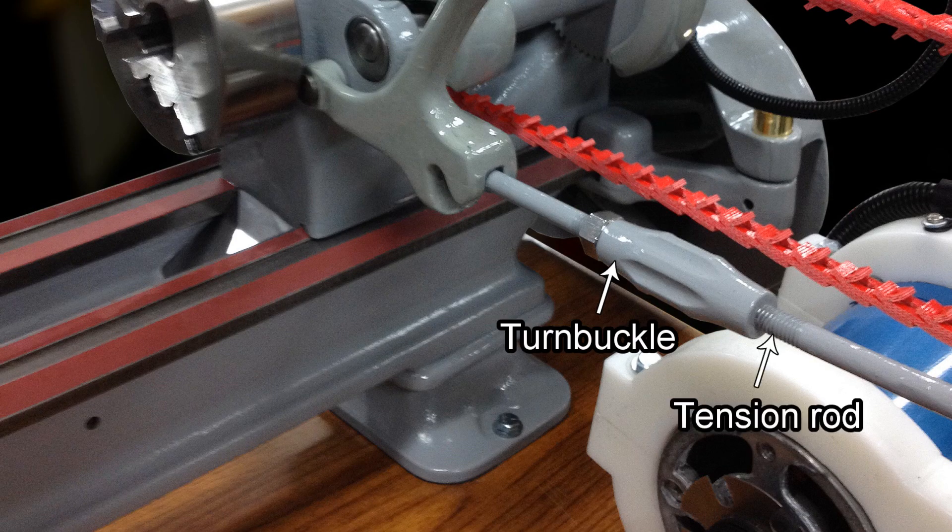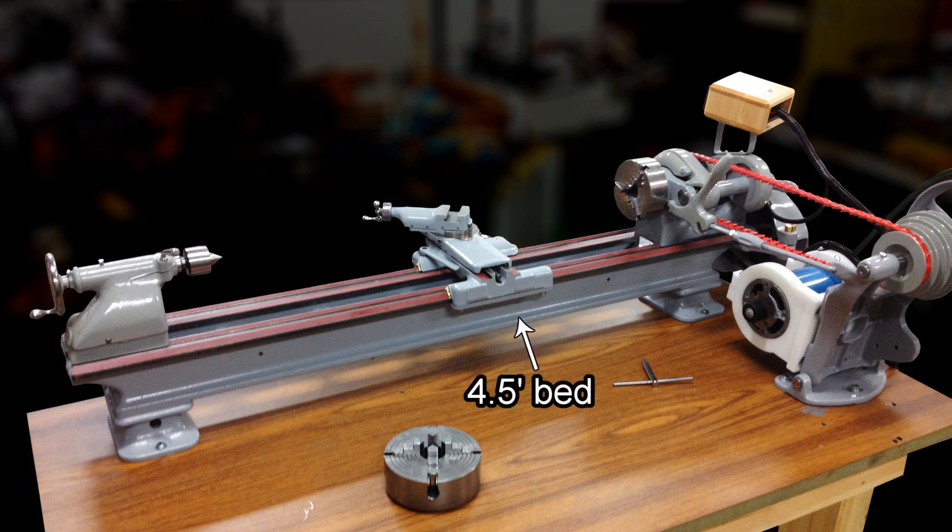I replaced the cracked turnbuckle and straightened the tension rod. I replaced the three foot bed with a four and a half foot bed and I used the matching 405 saddle.